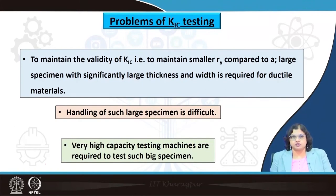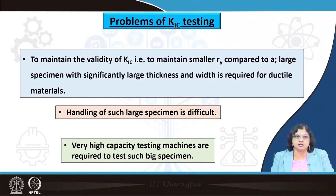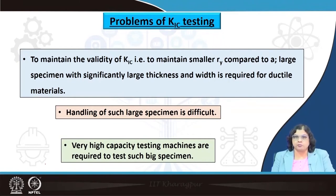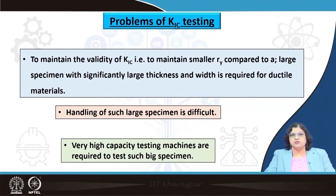Using more ductile materials means needing ever larger specimens, which is difficult if the material is expensive or hard to machine. Additionally, as shown in the numerical example, a high load capacity machine is required. Compact tension specimens help because their geometric factor Y is as high as 4 to 5, reducing load requirements. But for very ductile materials, very large specimens and very high load capacity machines are still needed, making plane stress testing the preferred alternative.